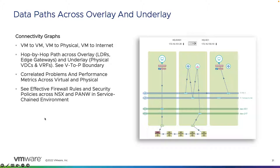So we can see hop-by-hop paths across the overlay. We can also see everything from our logical routers, our gateways, and underlay — physical VDCs and VRFs. We can see the V2P boundary, correlated problem and performance metrics across the virtual and physical, and effective firewalls in place between source and destination — across NSX, virtual firewalls such as PAN, Checkpoint, or Fortinet, and many different firewall vendors supporting virtual or physical firewalls within the infrastructure.